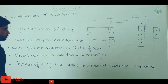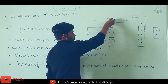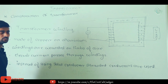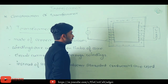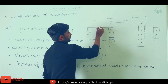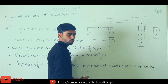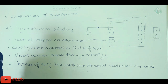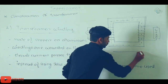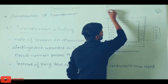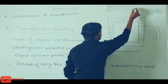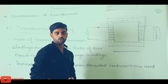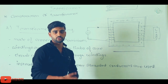The windings are wound on the limbs of the core. Electric current passes through the windings — primary current flows through the primary winding and secondary current flows through the secondary winding. Instead of using solid conductors, stranded conductors are used in order to reduce stray load losses. We will cover stray load losses in detail in our next video.